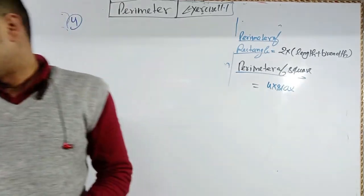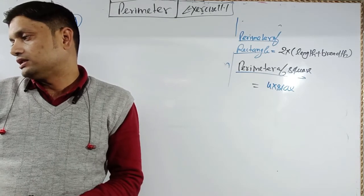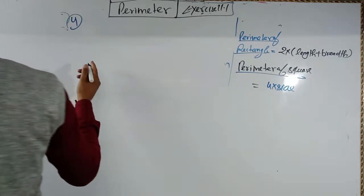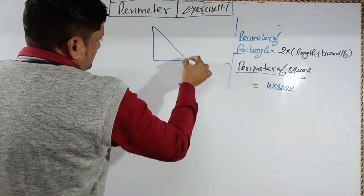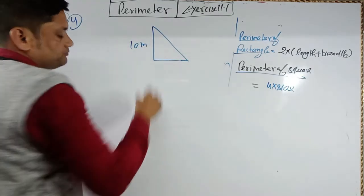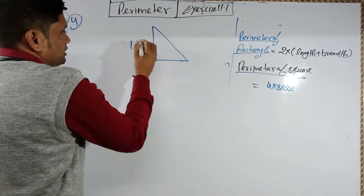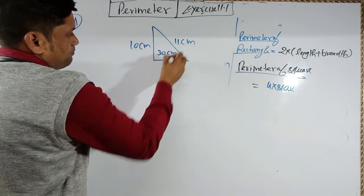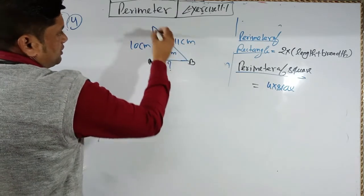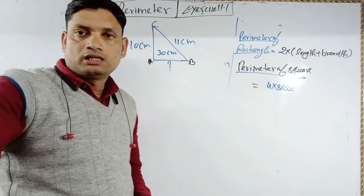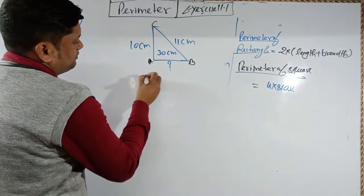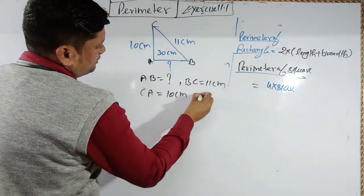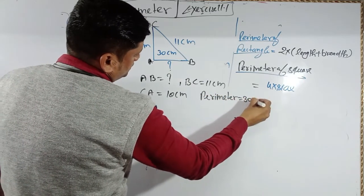Question 4: find the length of the missing side given the perimeter. Question 4a is a triangle. Given: BC = 11 cm, CA = 10 cm, and perimeter = 30 cm. You have to find side AB.